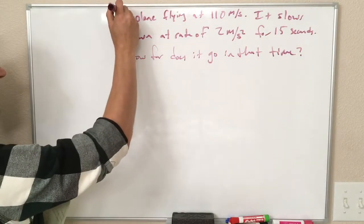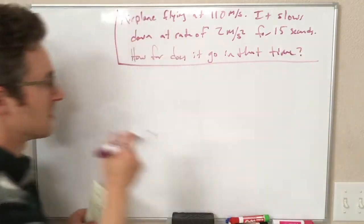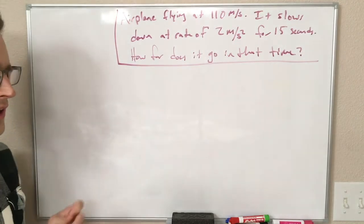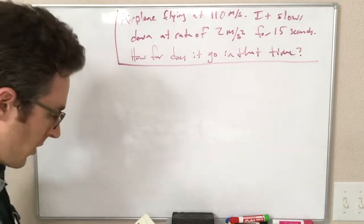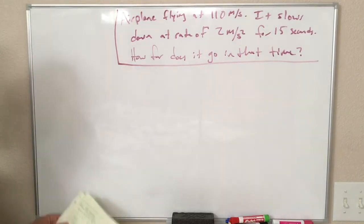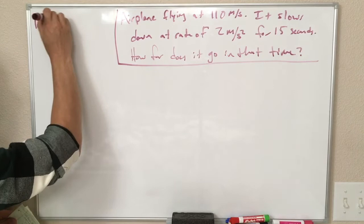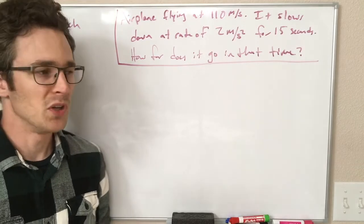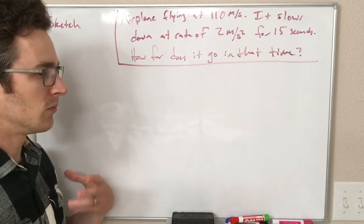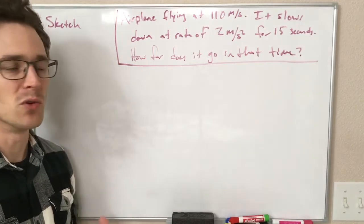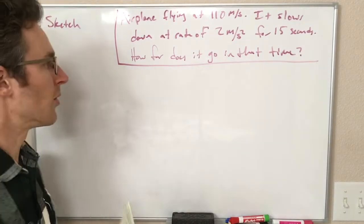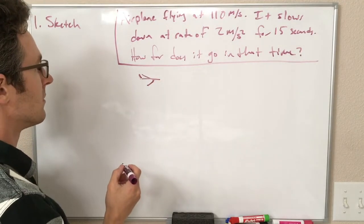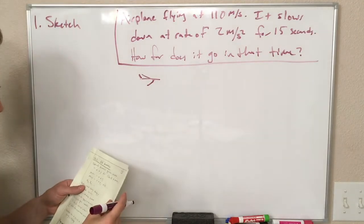So our problem-solving steps in the book go like this, and I have one to add to the book's steps. So our first step is to sketch the problem. The sketch doesn't have to be good. It should show the initial and final positions of the object. If it's moving, you should label the velocities if you know them. So here, here is our airplane. That's actually not a bad stick figure airplane. I'm kind of happy with that.